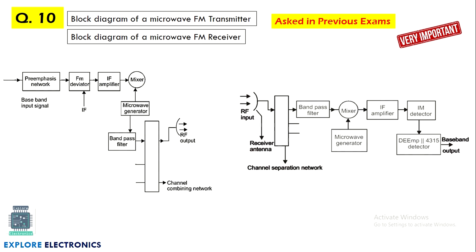Next is the block diagram of microwave FM transmitter and receiver. There are two block diagrams here. This question may be asked separately — to explain the block diagram of the microwave FM transmitter separately and the FM receiver separately. If they combine the two, less explanation is required; if asked separately, each needs to be explained in detail.